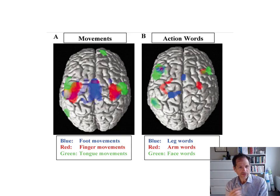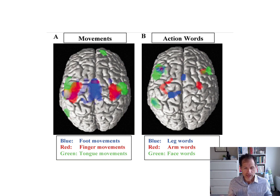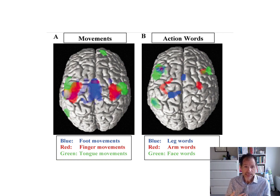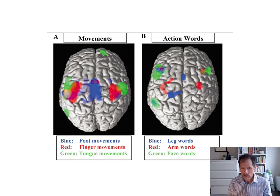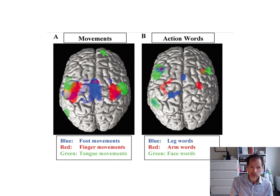This figure shows what they found. On the left, you can see the brain areas that are active when people move their foot, their finger, or their tongue. The blue areas correspond to foot movement, the red areas correspond to fingers, and the green correspond to tongue movements. On the right-hand side, panel B, you can see the areas that are activated when subjects just listen to a verb that corresponds to something you do with your leg, your arm, or your face. You can see the overlap between the movement areas. So when participants heard an arm word, it differentially activated greater activation in the same areas of the brain that correspond to when they were asked to actually move their fingers or arms.